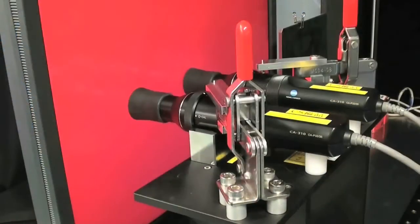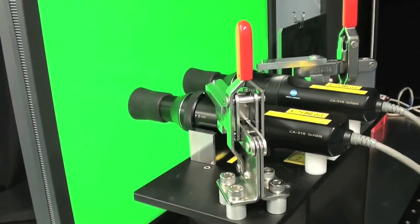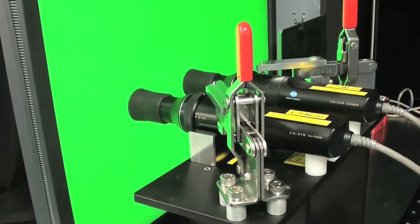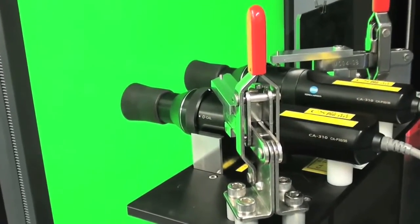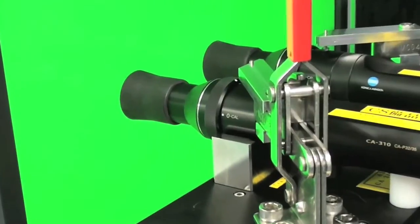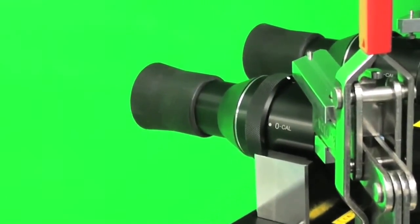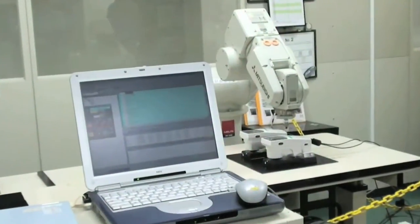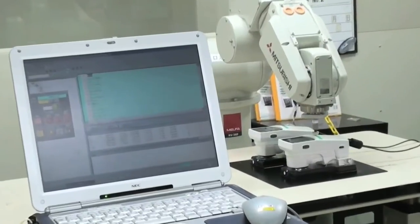Once assembled, all our instruments go through extensive quality control procedures. Here, we're testing a CA310 to ensure that all colors are properly calibrated. The all-new FD7, which is primarily used in the graphic arts field, is being tested for repeatability.